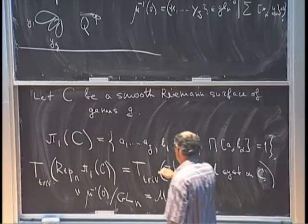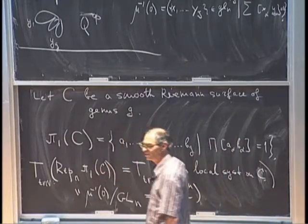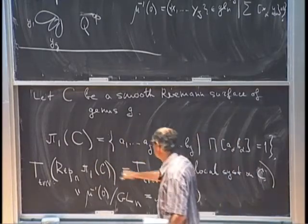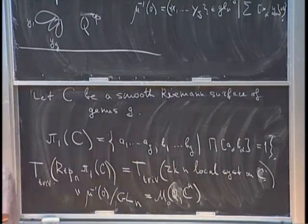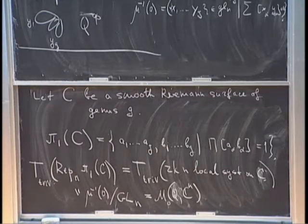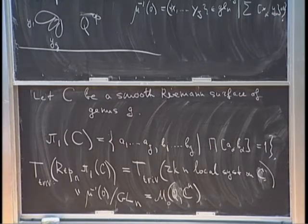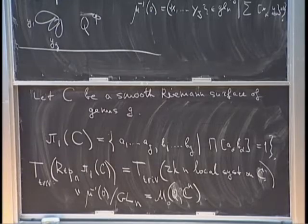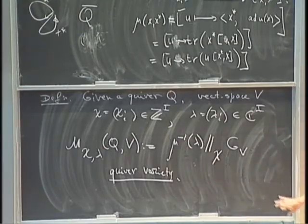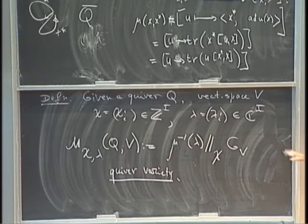These spaces are extremely singular — when I write tangent space, it is really a Zariski tangent space with no connection to a smooth structure. It is a badly behaved space. Now we go to Nakajima quiver varieties, which are slightly different but behave much better.